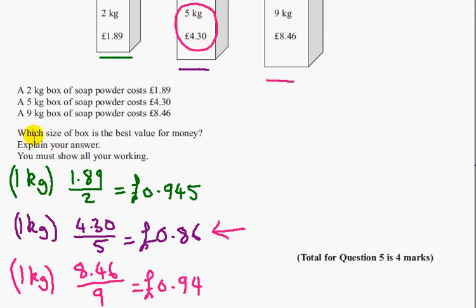So the question is, which size of box is best value for money? Make sure you always answer the question. So 5kg for £4.30, best value.